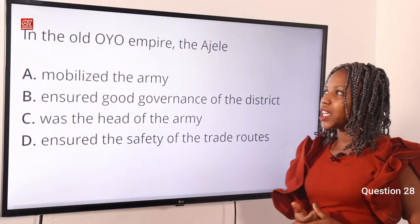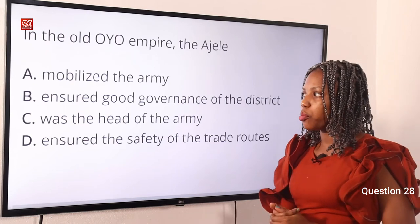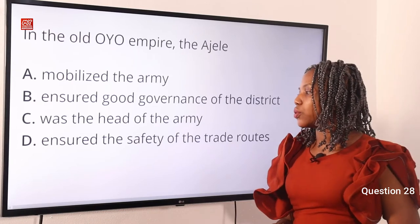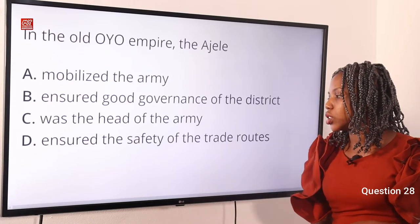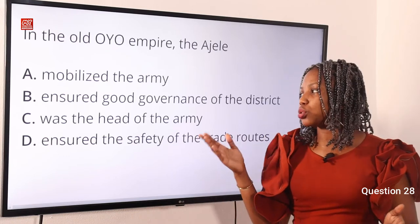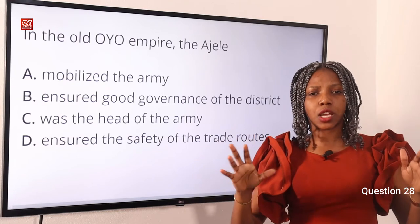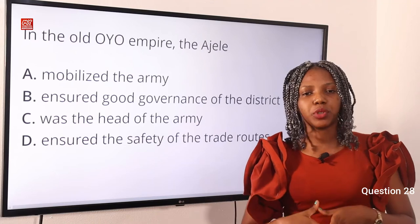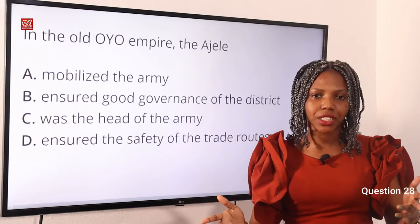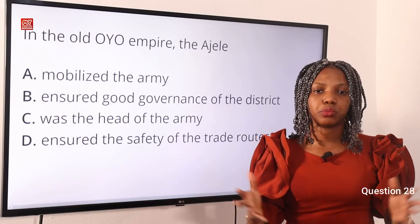Question 28. In the old Oyo empire, the Ajele dash. Option A, mobilized the army. Option B, ensured good governance of the district. Option C, was the head of the army. Option D, ensured the safety of the trade routes. The answer is Option B — ensured good governance of the district. The Ajele is the word used to describe the political agent appointed by the Oyo empire to supervise its interests and to monitor commerce.